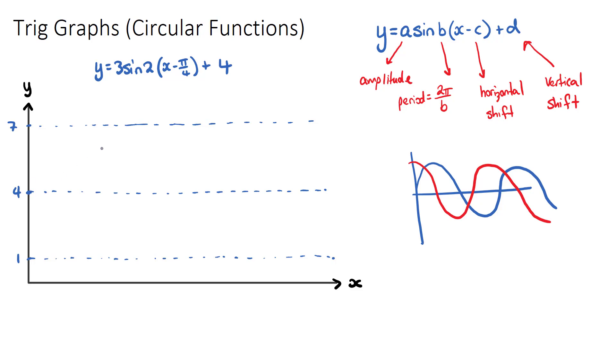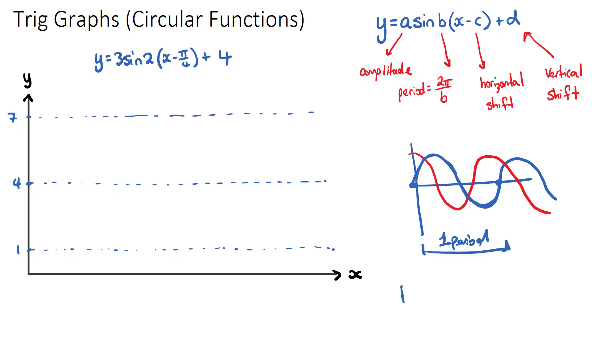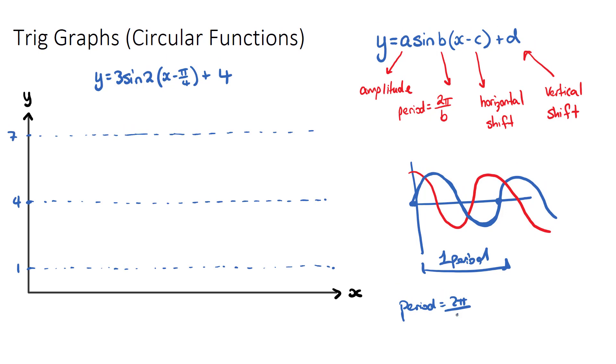Now a sine function should start at its middle, but there has been a horizontal shift, which we will look at. But the third thing I do want to look at is this b value of 2. Now this is to do with how skinny and wide our functions are. The period of our circular function, and one period will be from when it starts to when it finishes and then starts repeating itself. The period of a trigonometric function is 2 pi on b. So if we know b is 2, our period will be 2 pi on 2, which is pi.